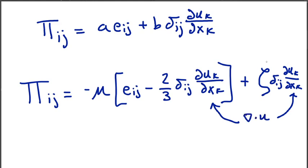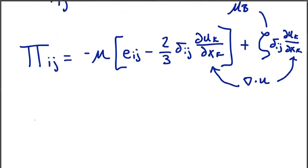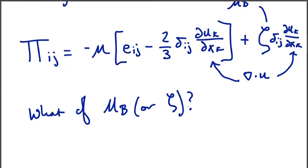And this thing, which we'll also call mu_B because it's a little easier to write for me, is the bulk viscosity, also called the second coefficient of viscosity. So what of this thing? What of mu_B? What can we say about this?